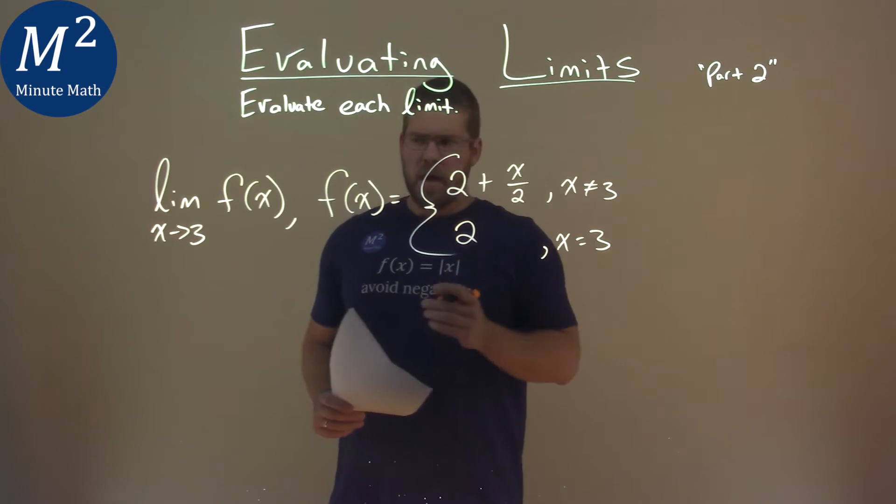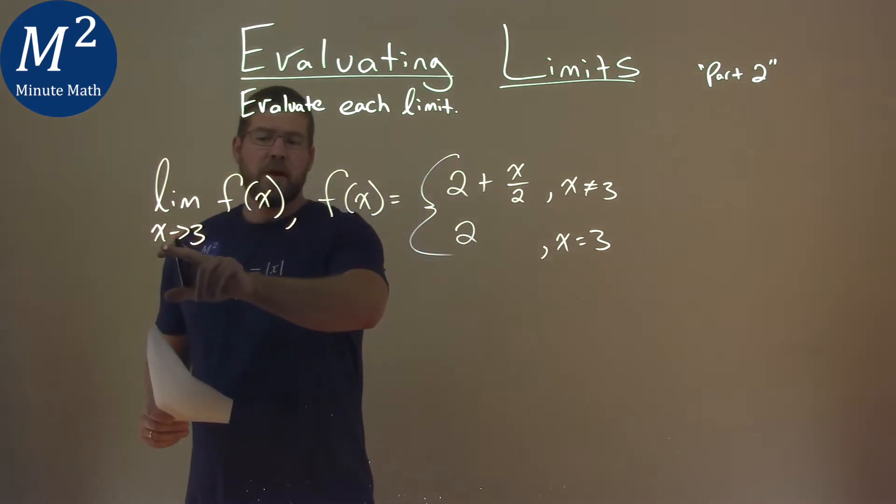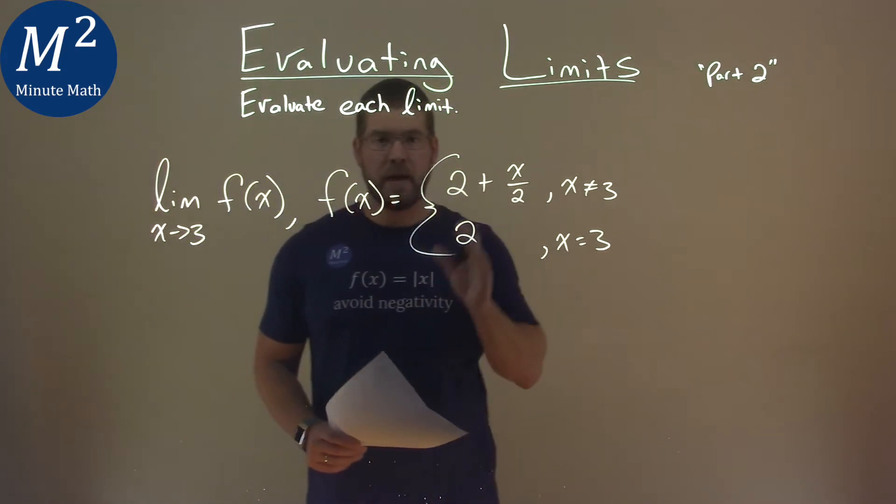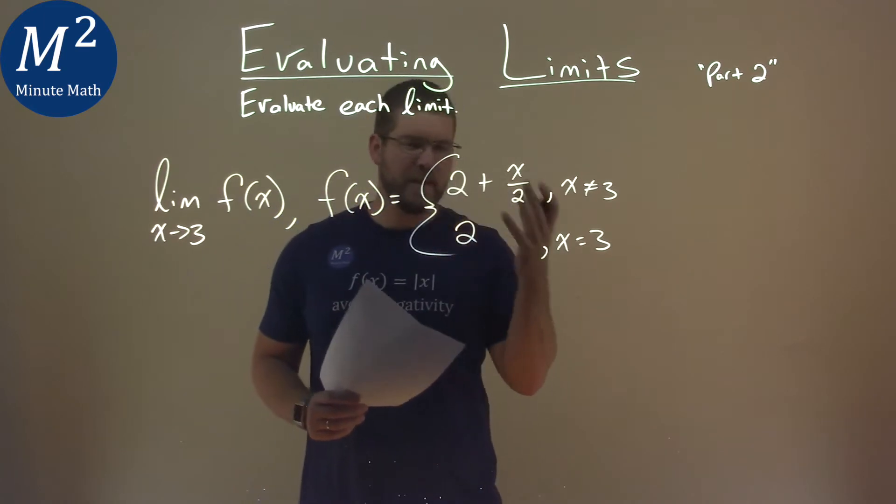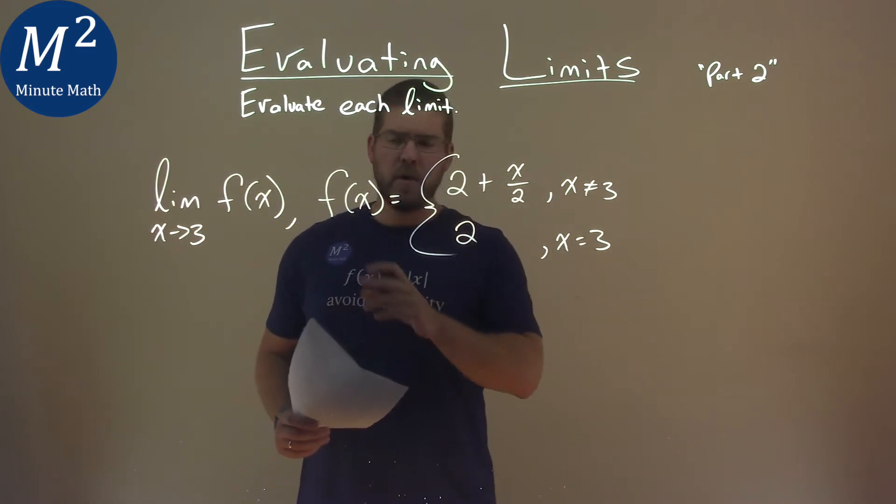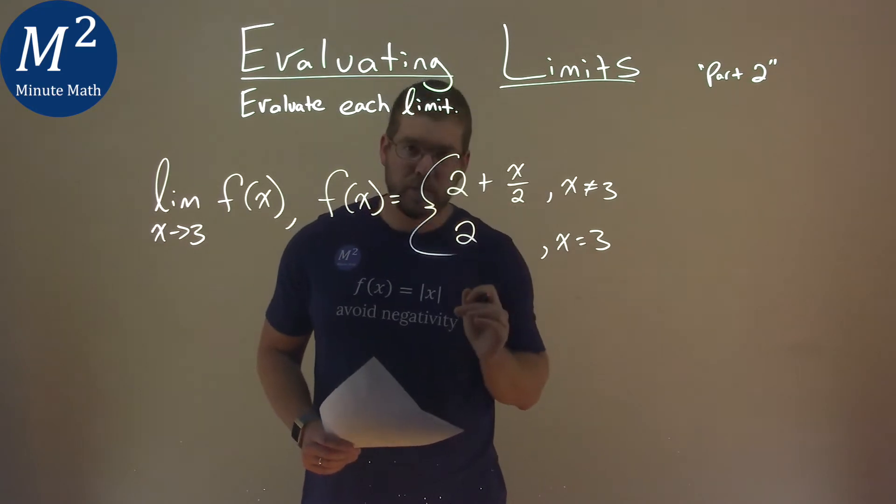We define the limit. Now, it tells us here we find where x is approaching 3, and this is the thing that everyone gets confused on. When it's approaching 3, it isn't exactly where it's equal to 3.